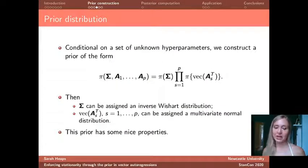Okay, so how do I set up the prior then? Well, as you'll see in the next slide, conditional on a set of unknown hyperparameters, I construct a prior in which I assume independence between each of my parameter blocks. And then for the purposes of this talk, I'm going to assign Σ an inverse Wishart distribution, and I'm going to assign all of the elements in each of my A matrices a multivariate normal distribution. And this prior has a number of nice properties.